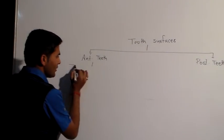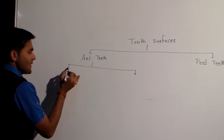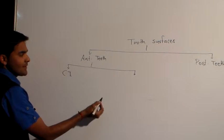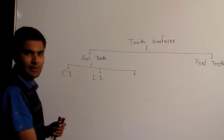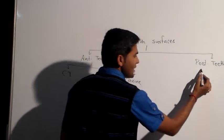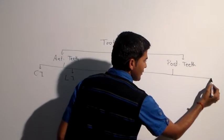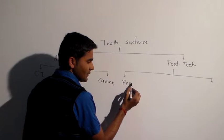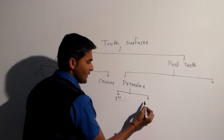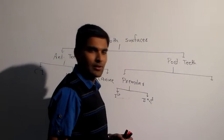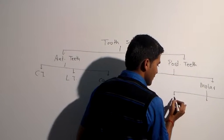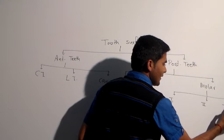Anterior teeth include central incisors, lateral incisors, and canines. Posterior teeth include premolars — first premolars and second premolars — and molars: first, second, and third molars.